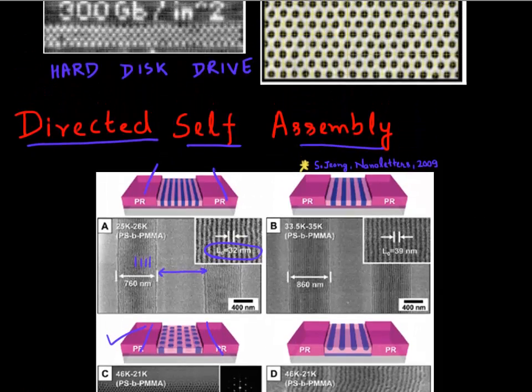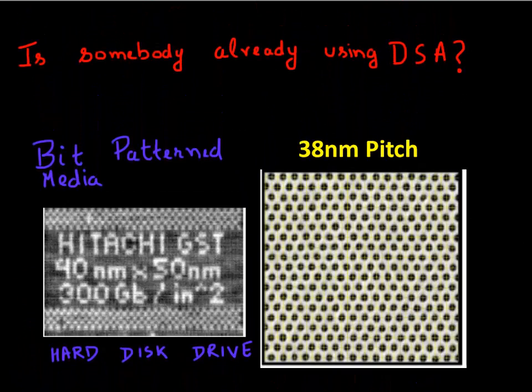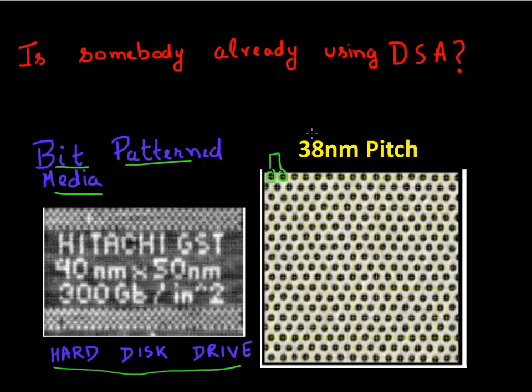So by the way, though I have described DSA as a next generation lithography technique, it seems like some people are already using it. Especially the bit pattern media or the hard disk drive that you use. So they use these very small holes to define each of these bits. And in this case, I'm showing a hard disk drive from Hitachi and they use the DSA to define these bits. And so they can print these very small pitch holes by using DSA at a very negligible cost as compared to if they were using double patterning or some other techniques.